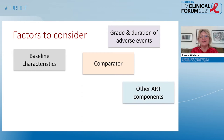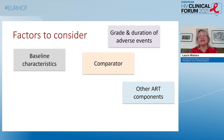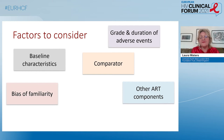Other ART components are crucial. In the Bictegravir first-line studies 1489 and 1490, we saw a real difference in nausea and insomnia rates in the dolutegravir arms according to whether dolutegravir was prescribed with abacavir/lamivudine or tenofovir alafenamide and emtricitabine as a backbone. So understanding the impact of components, not necessarily attributing differences to the main drug, is important.